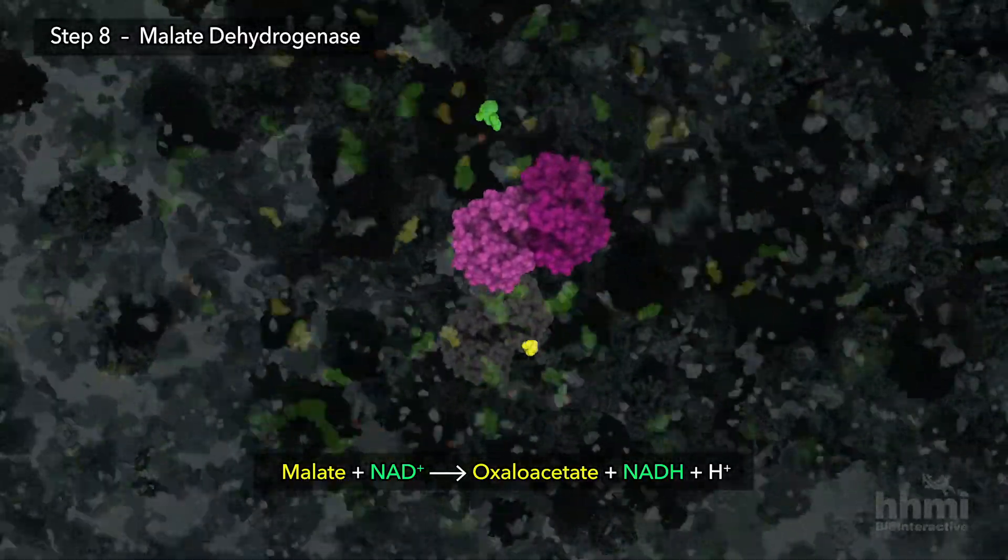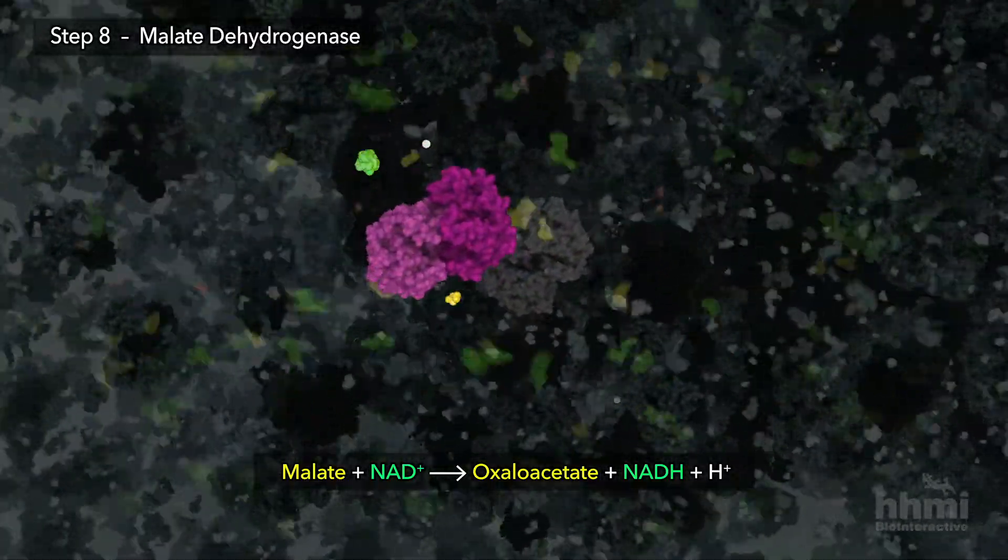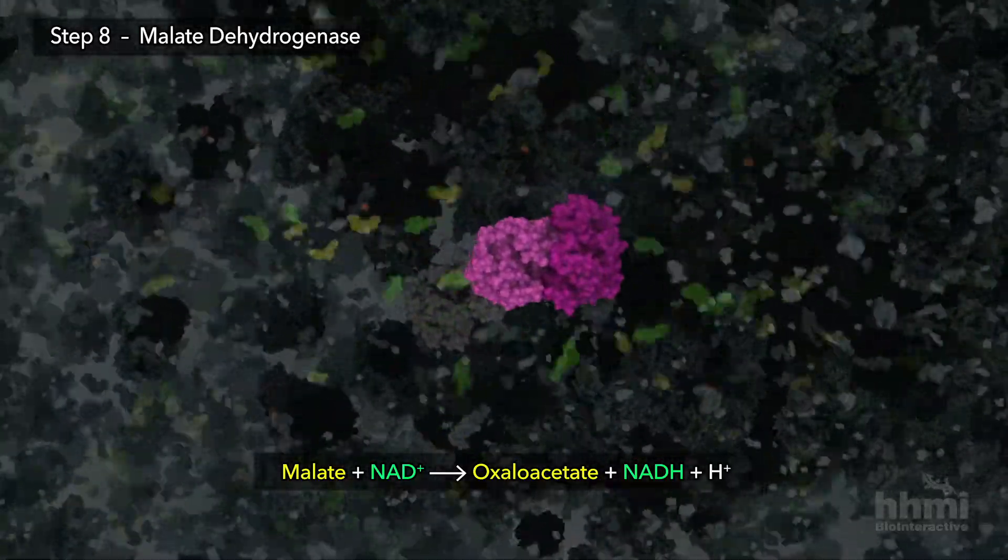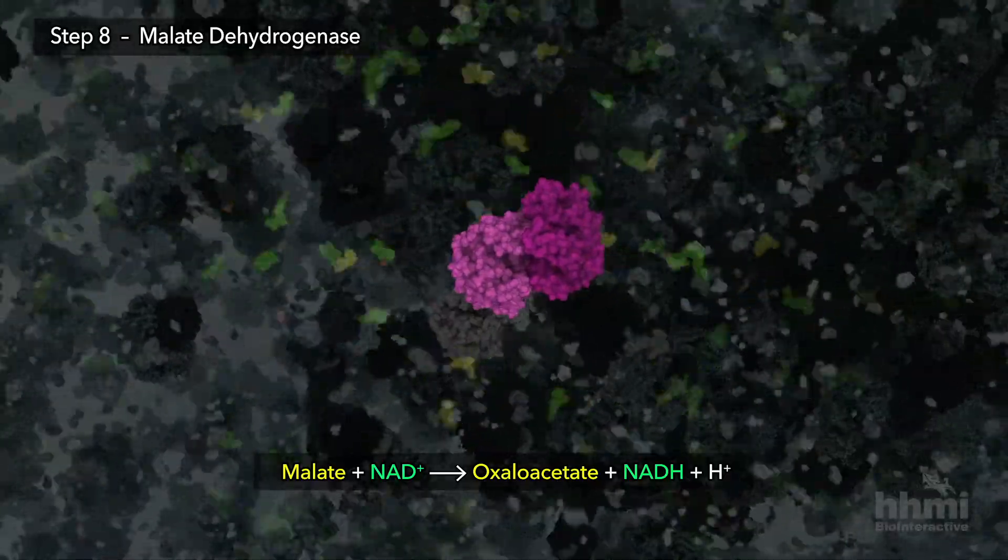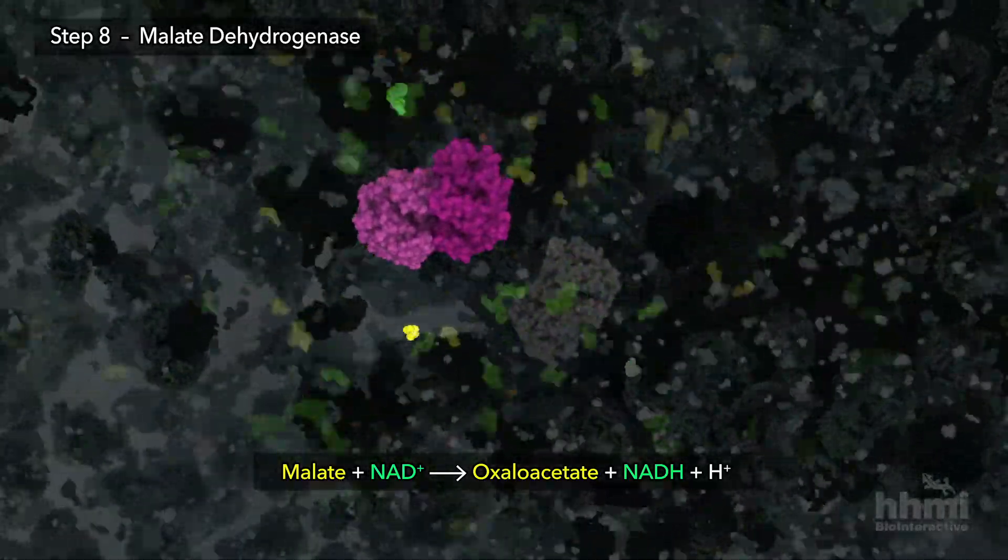Oxaloacetate can return to step one for another loop of the cycle and is also an essential building block for making amino acids and the genetic code of DNA and RNA.